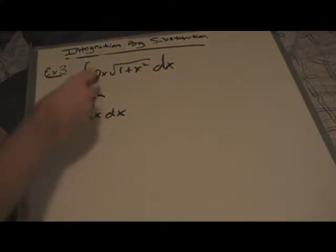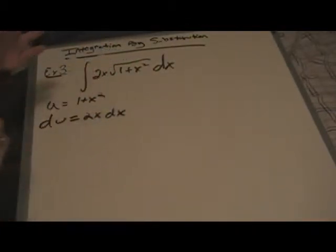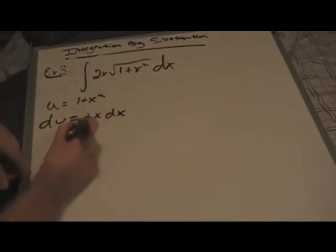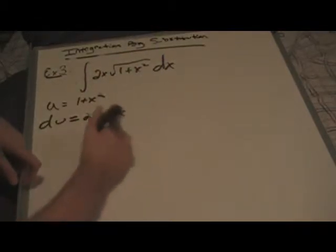du is 2x times dx. If we rearrange this to put the 2x on the other side, we can simply see that we can just substitute in du for that whole function, 2x times dx. And we have our u, so let's just get right into it.